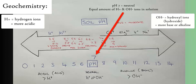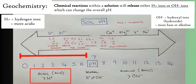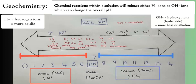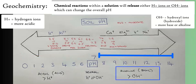Starting at 7, which is neutral, the concentration of hydrogen ions (H⁺) and the concentration of hydroxyl ions (OH⁻) are equal. If there are fewer hydroxyl ions and more hydrogen ions, the pH drops toward zero and becomes acidic. If, on the other hand, there are more hydroxyl ions and fewer hydrogen ions, the pH increases above 7 up to 14, and we call that alkaline or basic.